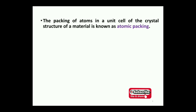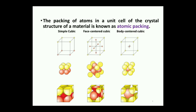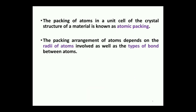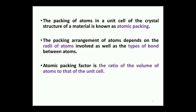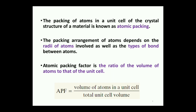The packing of atoms in a unit cell of the structure is known as the atomic packing factor (APF). The unit cell represents the overall structure of the material, and that structure determines the properties of the material. The packing arrangement depends on the radius of the atoms and the types of bonding between neighboring atoms. APF is the ratio of the volume of atoms to that of the unit cell: APF = volume of atoms in a unit cell divided by total unit cell volume.